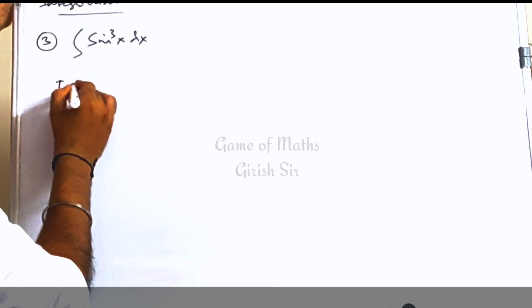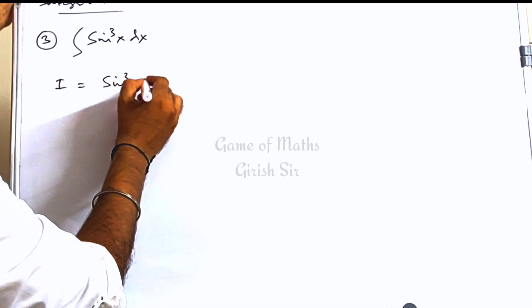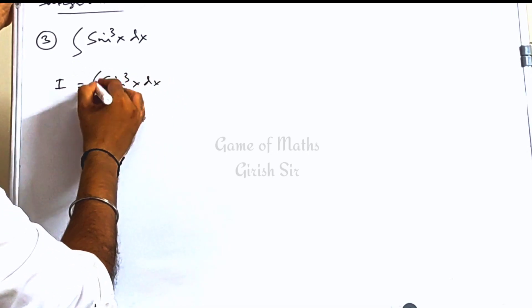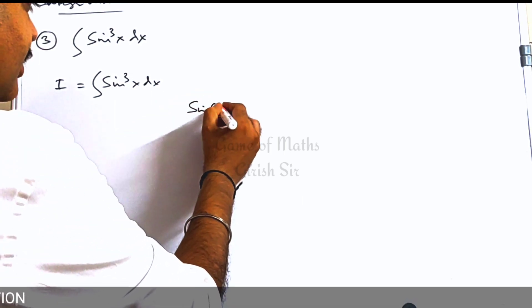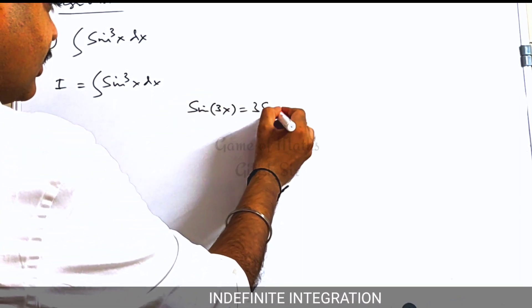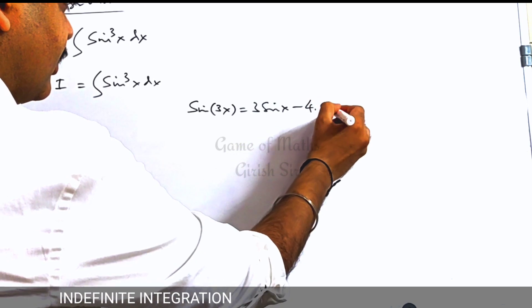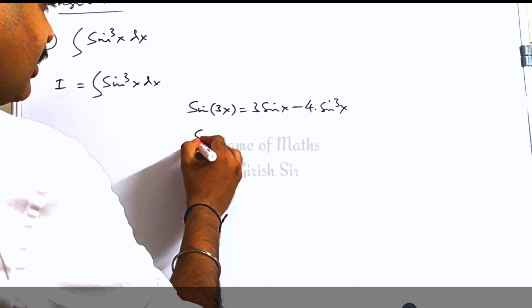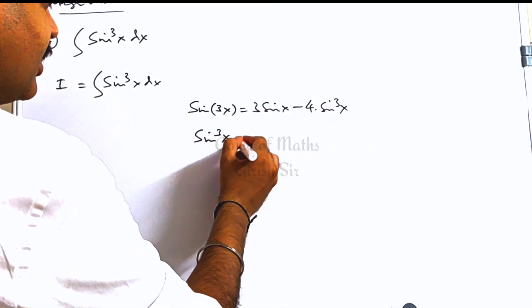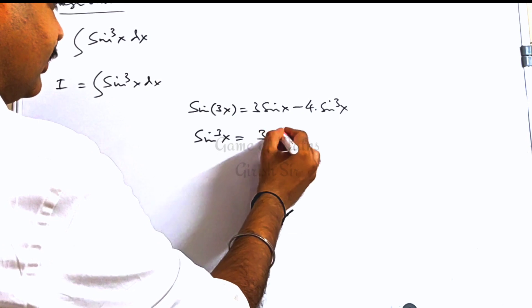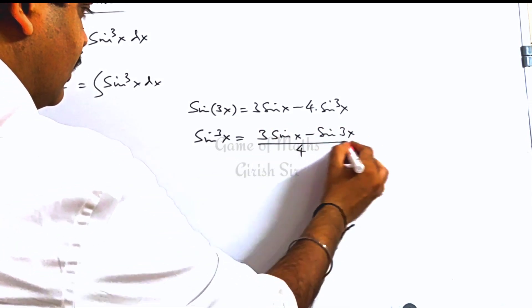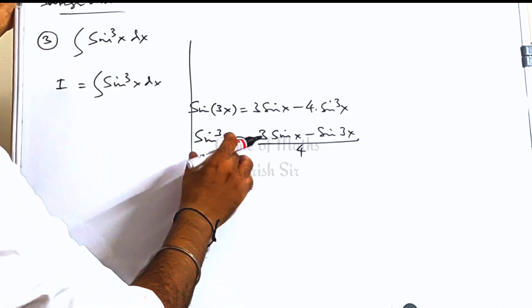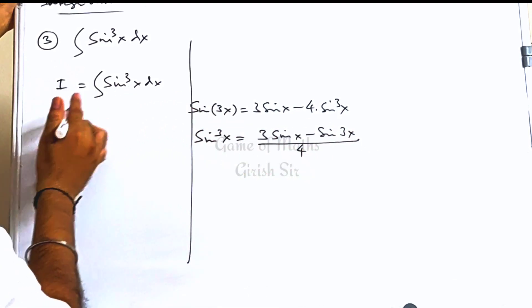See this next question: sin cubed x. We will again try to make it a linear function. For that you can use the result sin 3x = 3 sin x minus 4 sin cubed x. From here you can obtain the value of sin cubed x as (3 sin x minus sin 3x) divided by 4. Now we put this expression in place of sin cubed x.